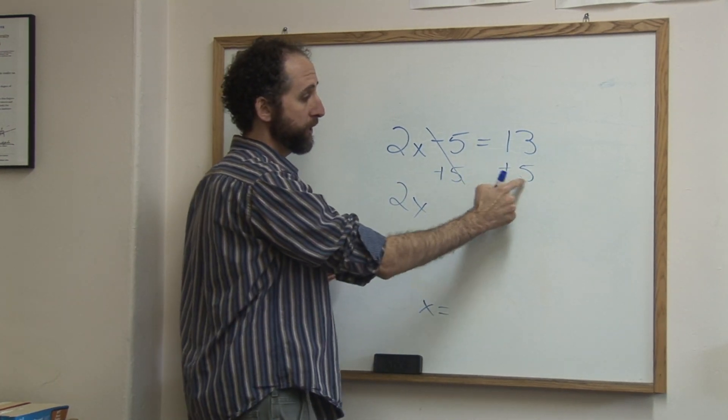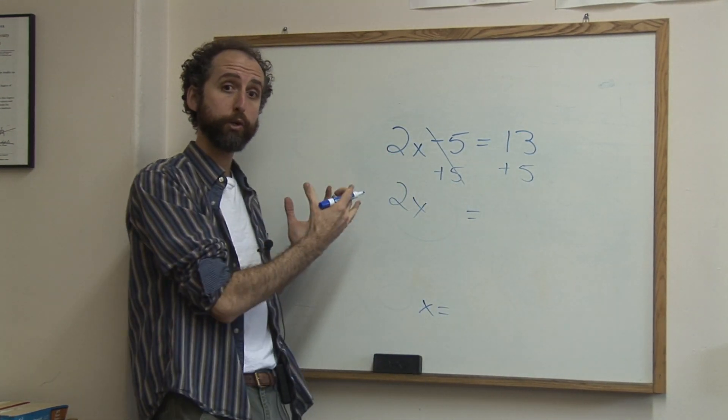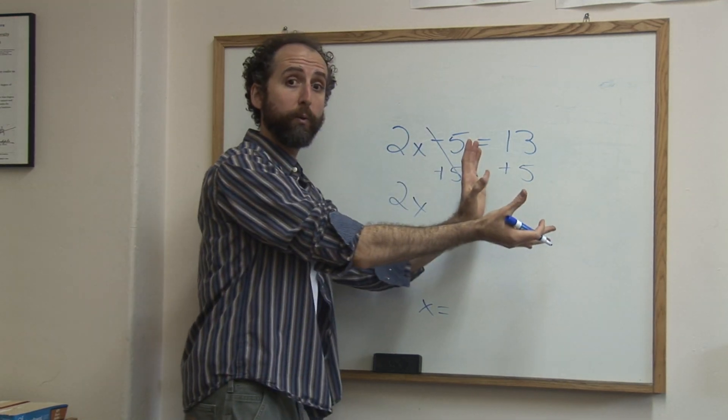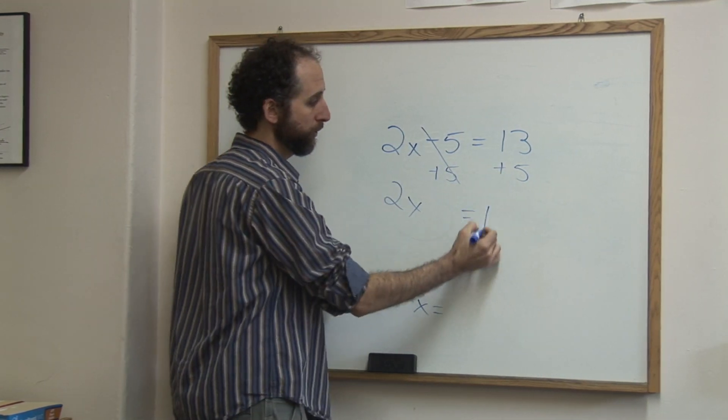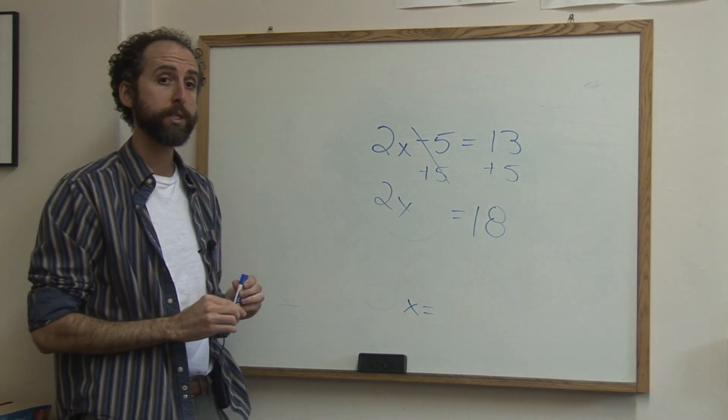2x equals 13 plus 5. Now whatever you do to one side of an equation, you have to do to the other side of the equation. So we're going to do it here too, it gives us 18. We have 2x equals 18, we want to get x alone.